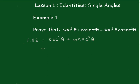Now we'll change that into the reciprocals. So sec²θ is 1/cos²θ and cosec²θ is 1/sin²θ.